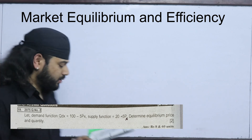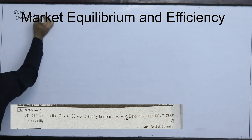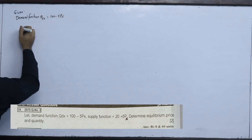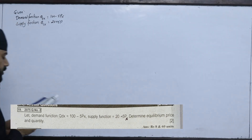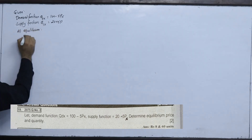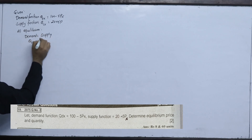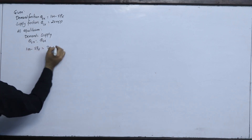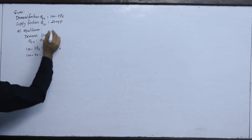So we have to do that. The demand function Qdx = 100 - 5Px and supply function Qs = 20 + 5Px. We have to determine the equilibrium price and quantity. At equilibrium, demand equals supply, so Qdx = Qsx.